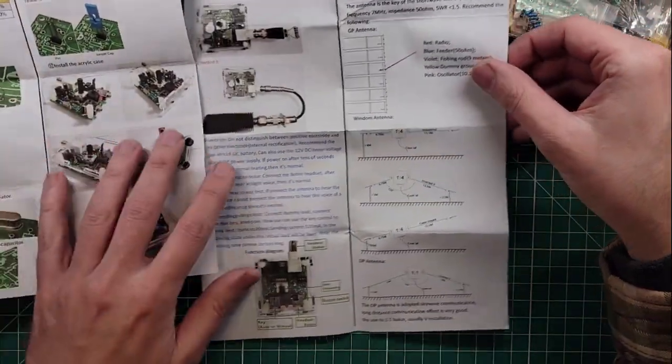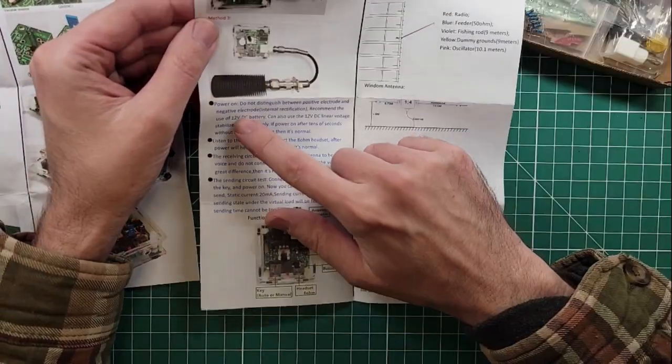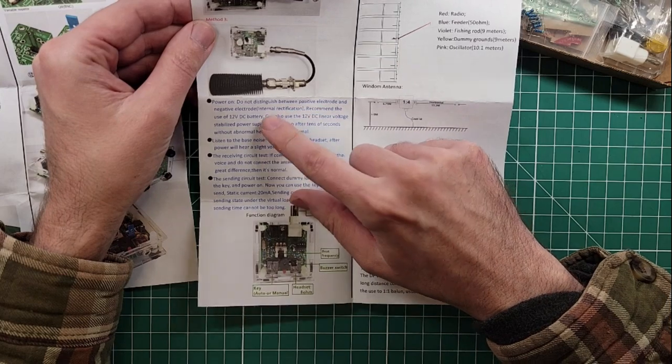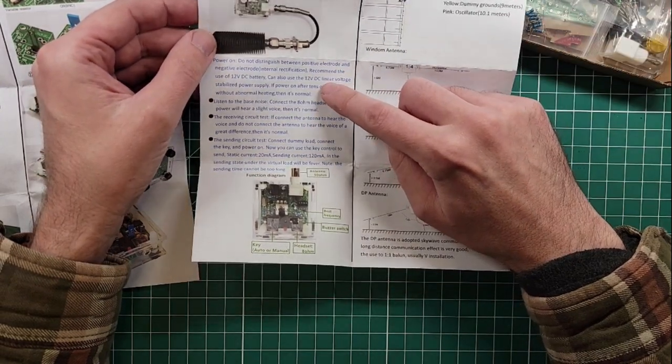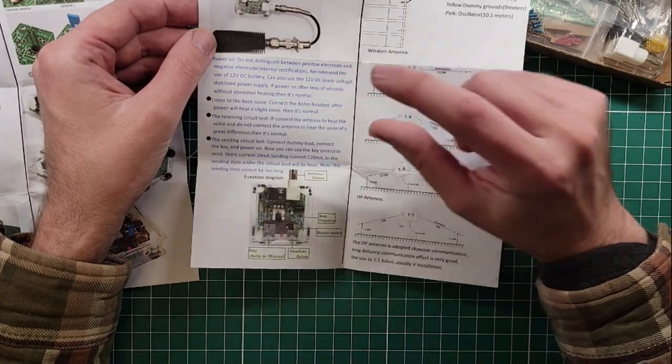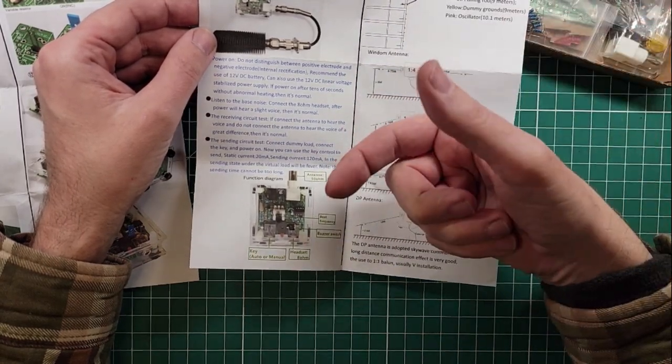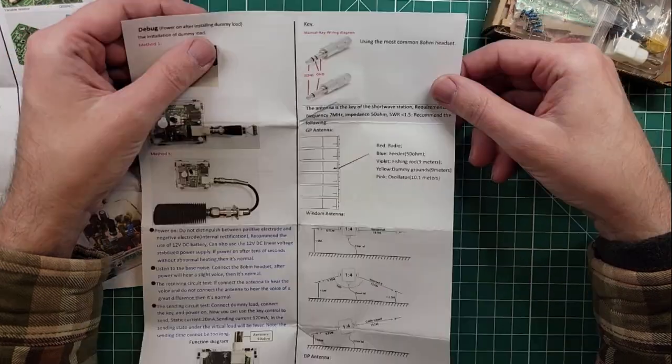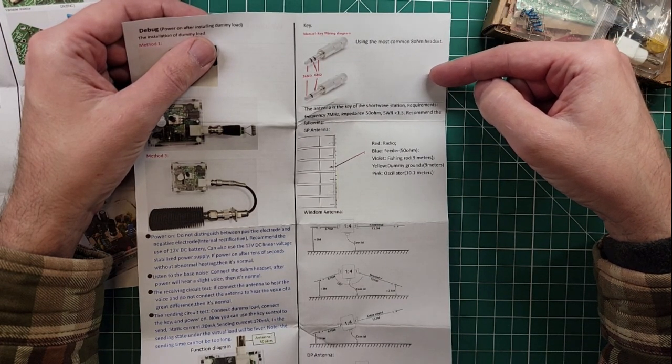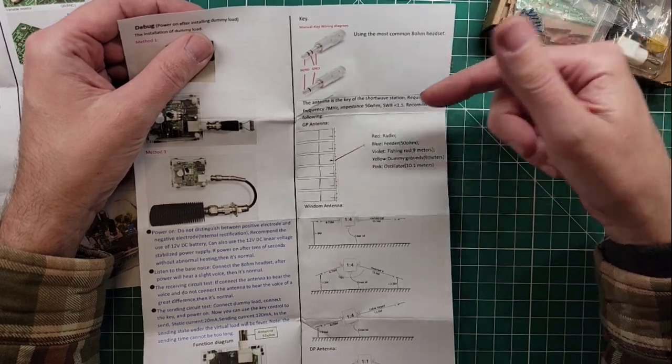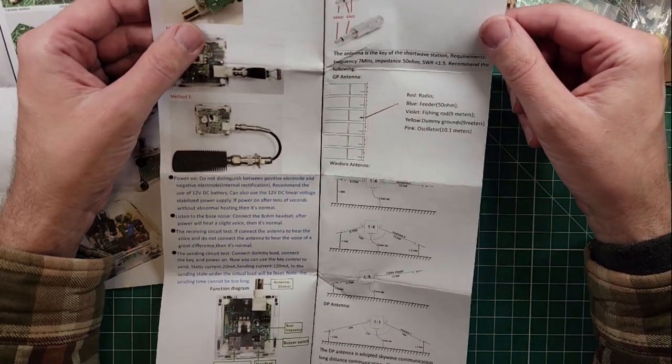This one we got off of Amazon. There is a link in the description down below where to get it. And by the end of the video series, maybe you'll decide that you want one. Maybe you'll decide that it's hot garbage. I don't know. I haven't built it yet. The instructions are pretty good. Lots of pictures. I like that. Power on, do not distinguish between positive electrode and negative electrode. Internal rectification. What they're saying here, if I understand their language correct, is you can plug it in or reverse the polarity and either one is going to be fine.